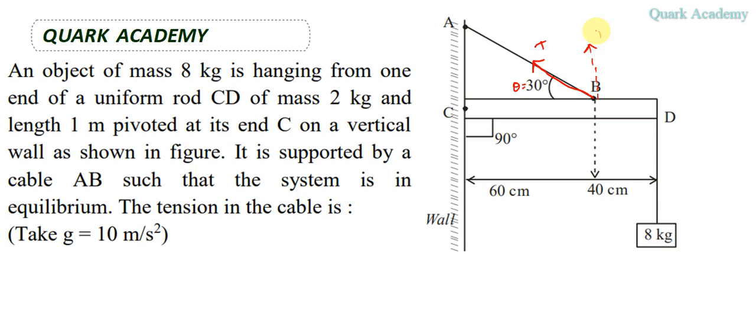Now we can take the components of this tension. This will be T sine theta as the vertical component, and the horizontal component will act in this direction, that is T cos theta. This is one force which is acting on the rod.